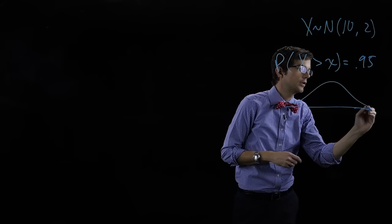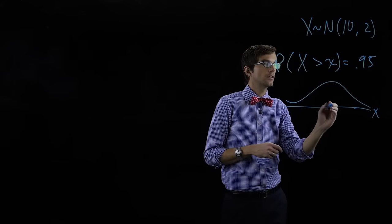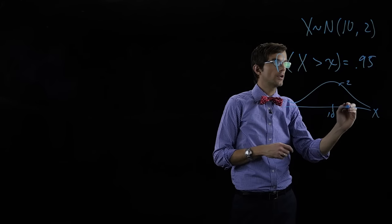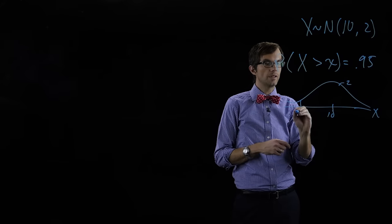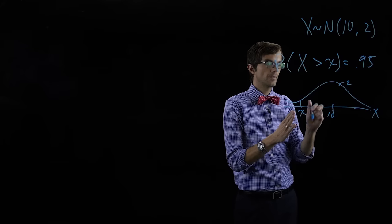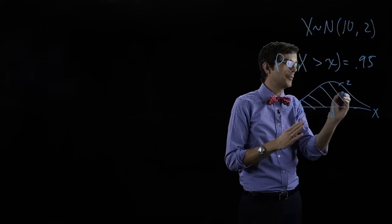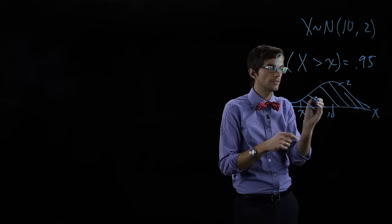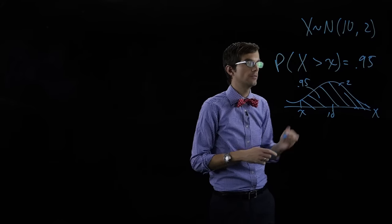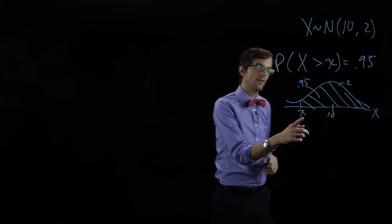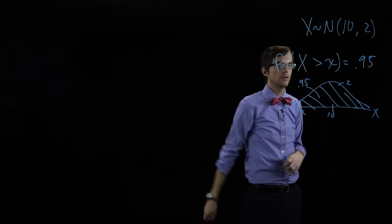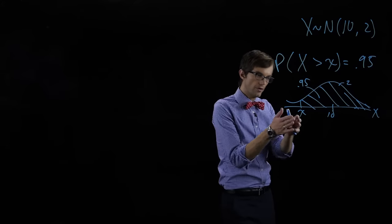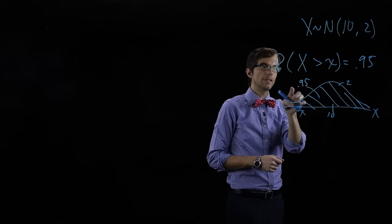Here's a value x on the axis — the mean is ten, standard deviation is two — and we want to know what value of x gives us a probability of 0.95 that x is greater than it. So we need to find what value is on the horizontal axis above which the probability is 0.95.